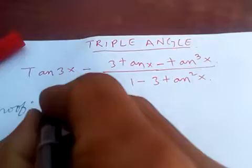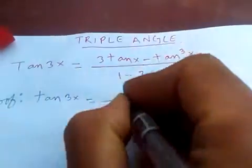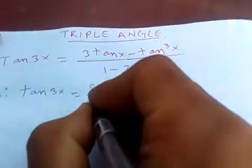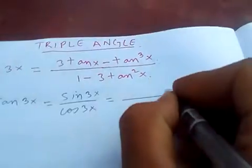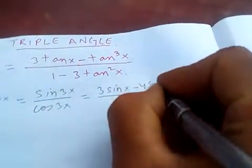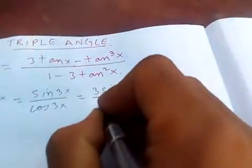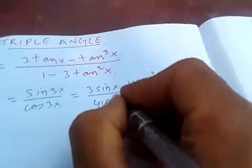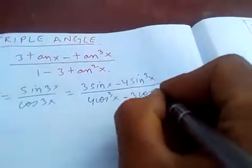Tan 3x is the same as sin 3x over cos 3x. Sin 3x is 3 sin x minus 4 sin³x, and cos 3x is 4 cos³x minus 3 cos x.